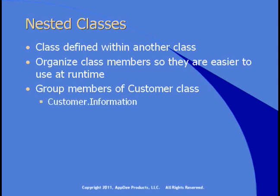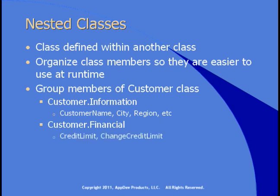For example, you could create an information class nested inside the customer class, containing properties such as customer name, city, region, etc. You might create a financial class nested inside customer, containing the credit limit property and the change credit limit method. And you might have a sales class nested inside customer containing the record sales method. Users of the class would then create an instance of customer.information to access informational members, and an instance of customer.sales to access the record sales method. It's a little more typing, but a great way to group members of a class with a large number of members.